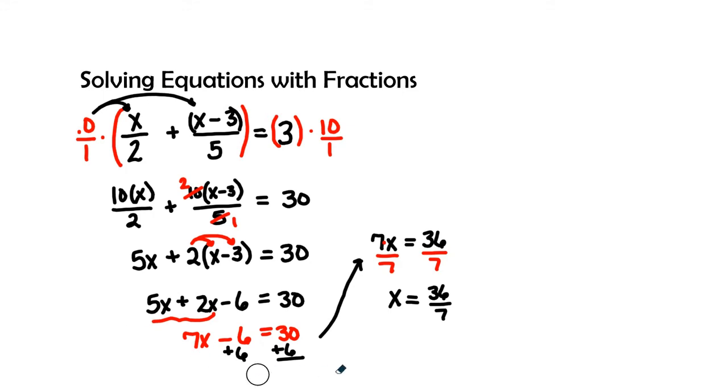Let's go ahead and try another problem. We have 2x divided by 5 plus the quantity of x plus 1 divided by 3 equals 4.